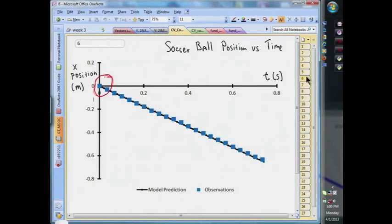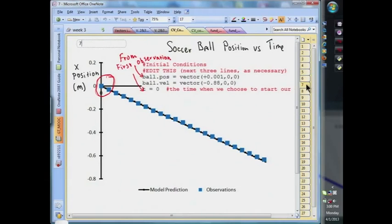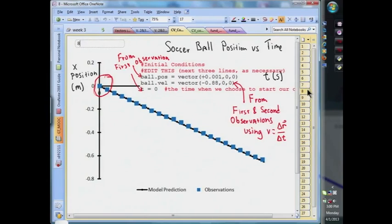First, we should recognize that at early times, the predicted positions aren't really predictions. Recall, we used our observations to set the initial conditions for our model. We used the first observed position and corresponding time to set those quantities in the model, and we used the first and second observed positions and corresponding times to estimate the initial velocity of our ball for our model.